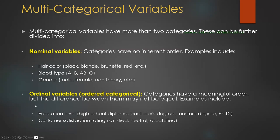Another type is ordinal variables, or ordered categorical variables. These variables are categorical, they have more than two categories, and the categories are ordered. For example, educational level — high school, bachelor's degree, master's degree, and PhD. Or customer satisfaction rating — satisfied, neutral, and dissatisfied. As you can see, there is an order for these categories.